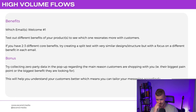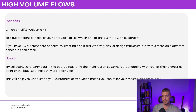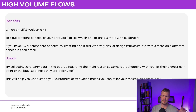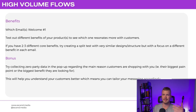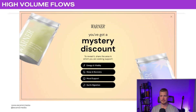Next, test which benefits you're highlighting. If you have two to three different core benefits, create a split test with very similar design structure but with a focus on different benefits in each email. Try collecting zero-party data in the pop-up regarding the main reason customers are shopping — whether it's their biggest pain point or the main benefit they're looking for. This helps you understand your customers better so you can tailor messaging in campaigns and flows accordingly.